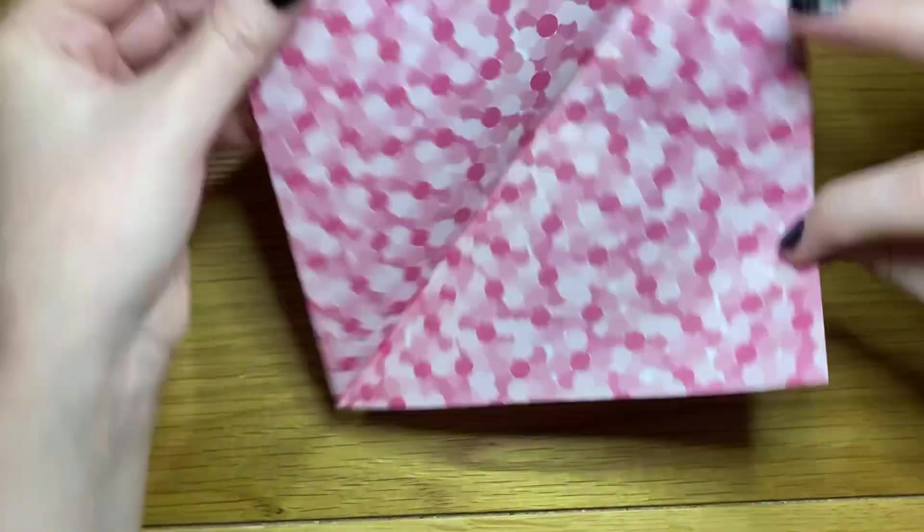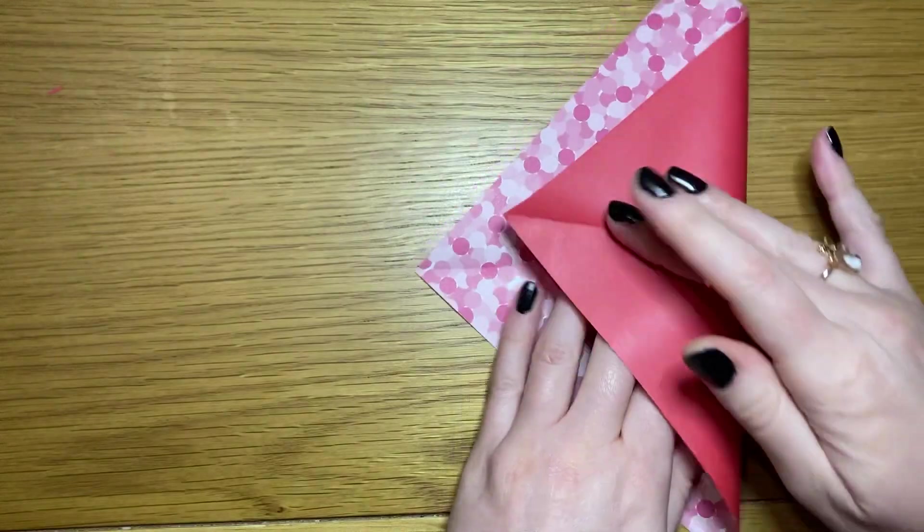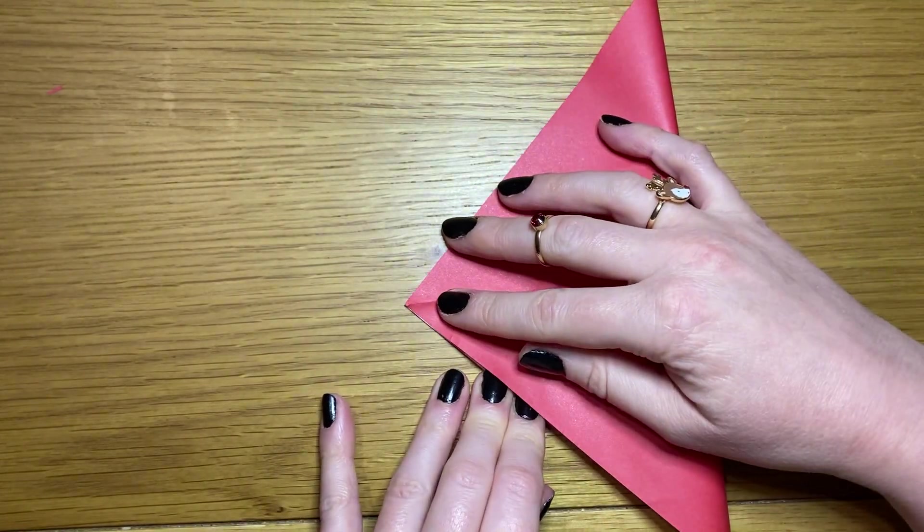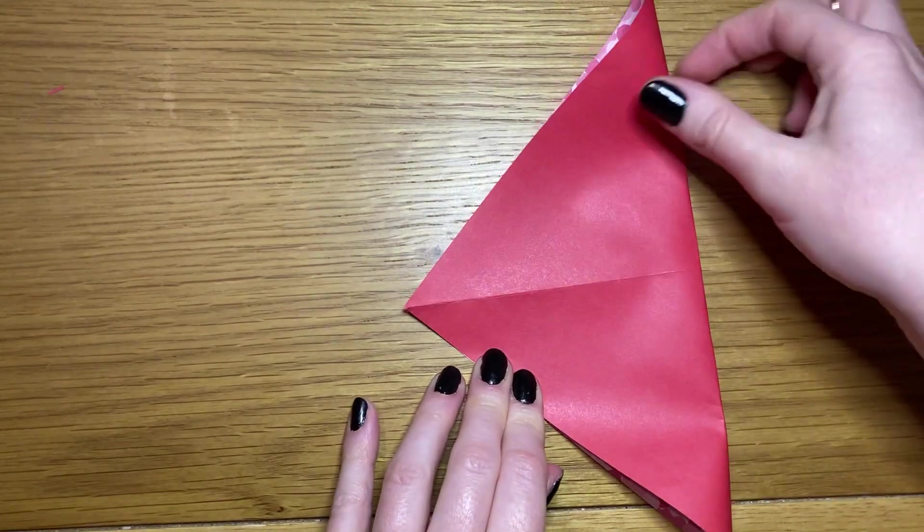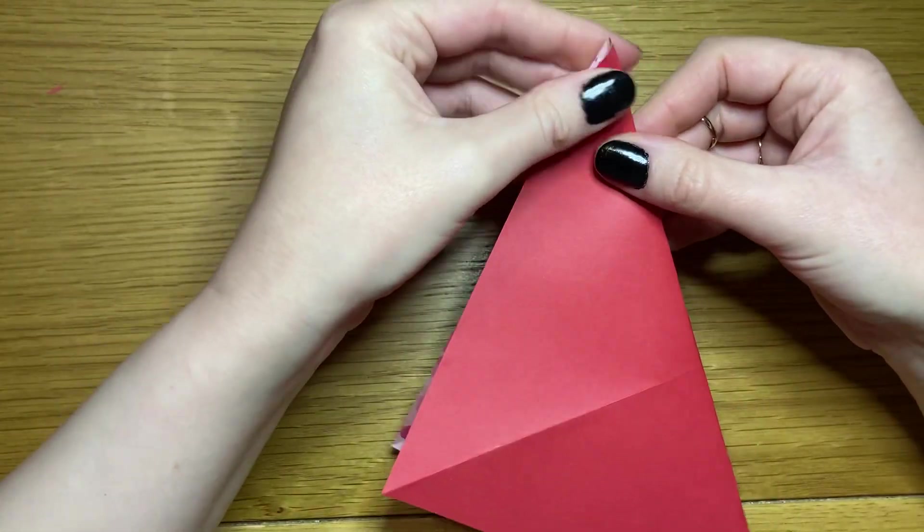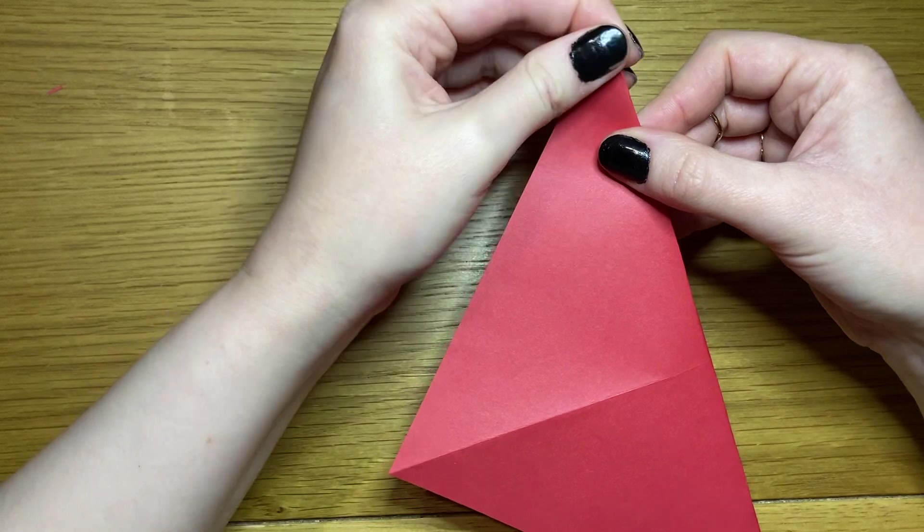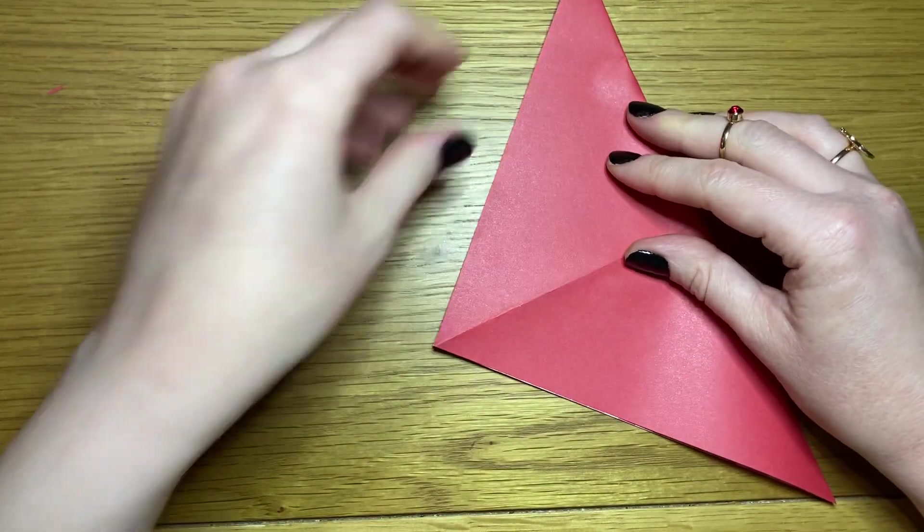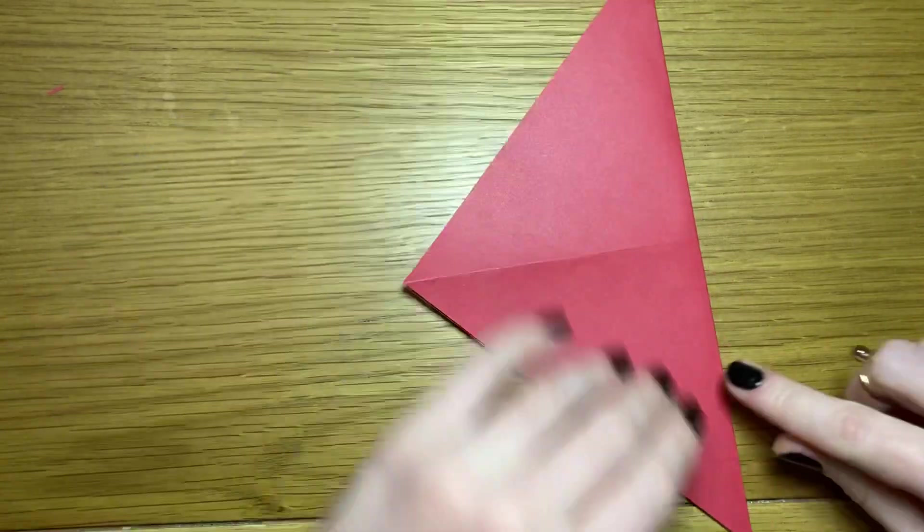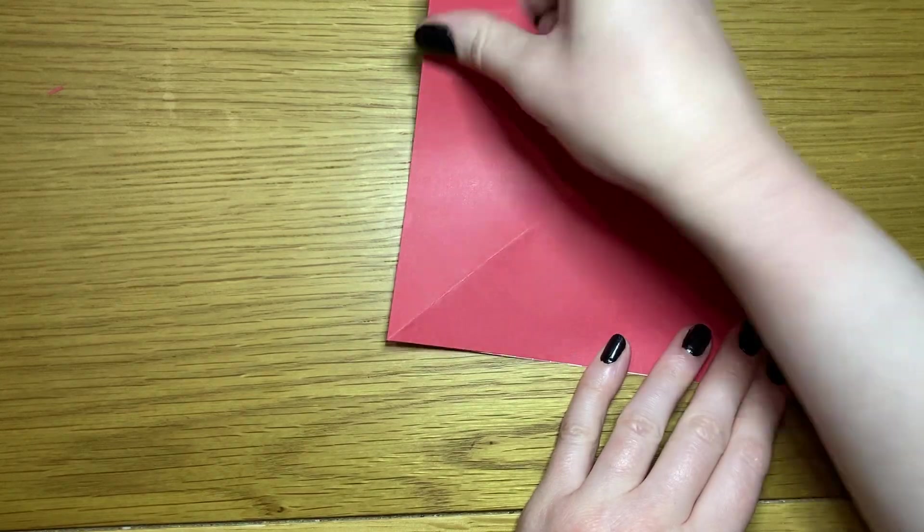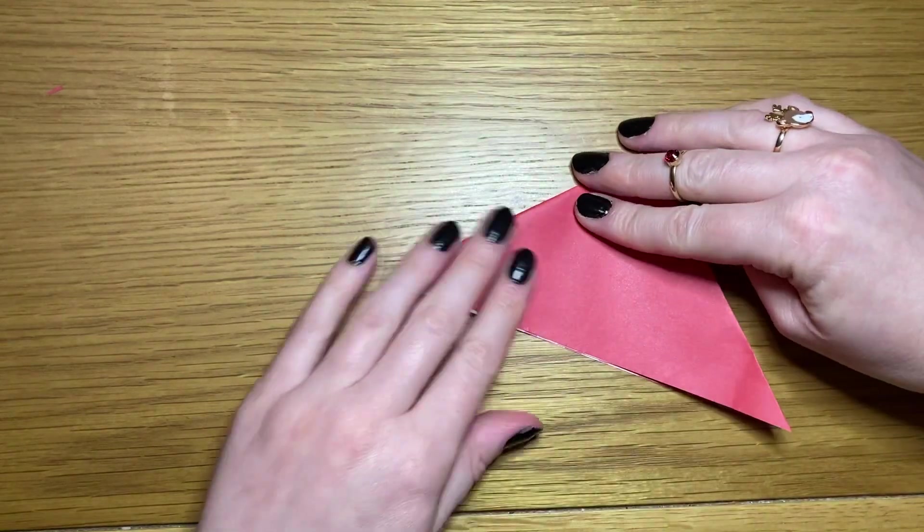Open it out and repeat in the opposite direction. I'm folding half into a smaller triangle.